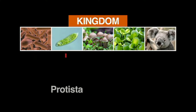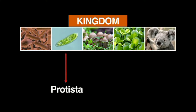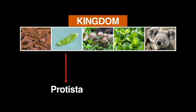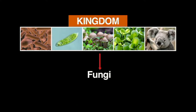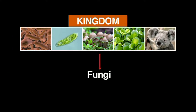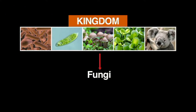Protista, which includes all one-cell life forms with a nucleus, like the amoeba. Kingdom Fungi is comprised of living organisms, such as the mushroom.